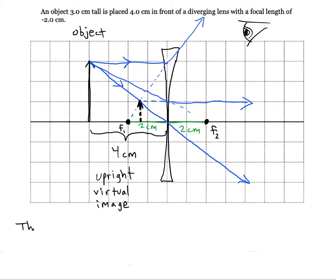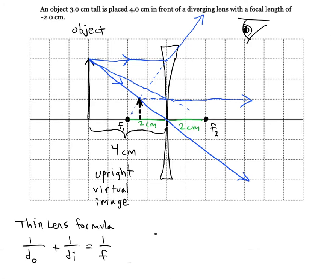We want to use the thin lens formula, which says one over D O plus one over D I equals one over F. So distance of our object was four centimeters. We want to find the distance of the image and we'll plug in our focal length, but we can't forget the negative. If we didn't put the negative in, it would think it was a converging lens. But it's a diverging lens, so we have to put in the negative. The distance of the image is negative 1.33 centimeters.